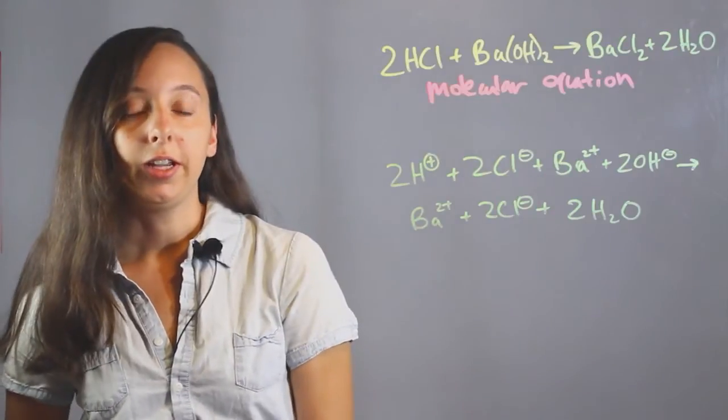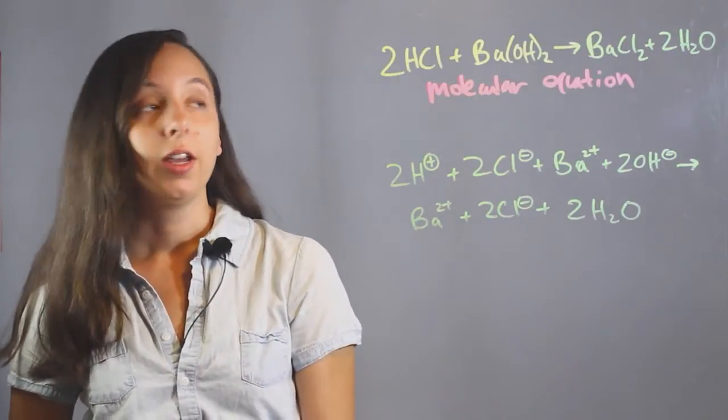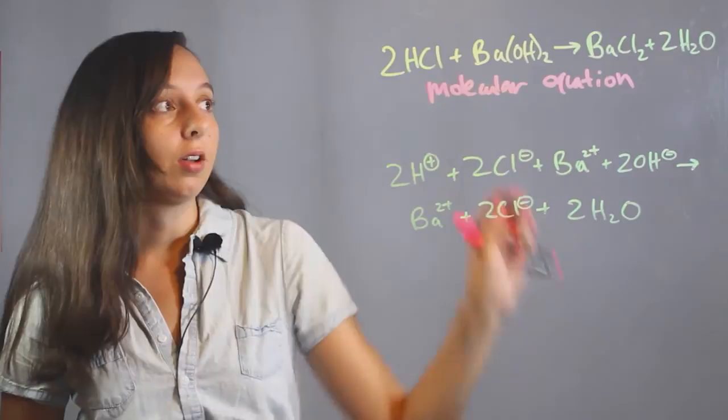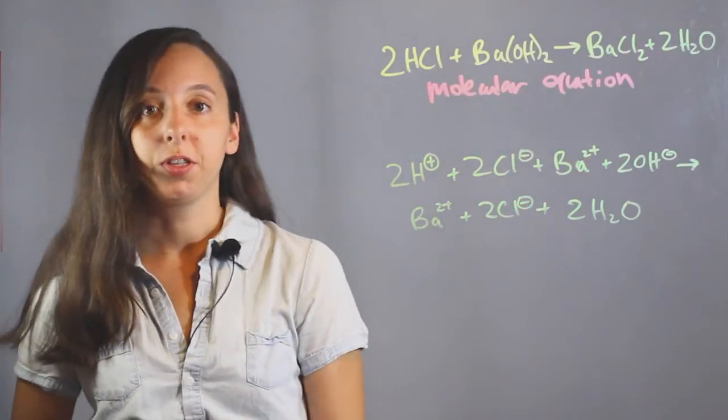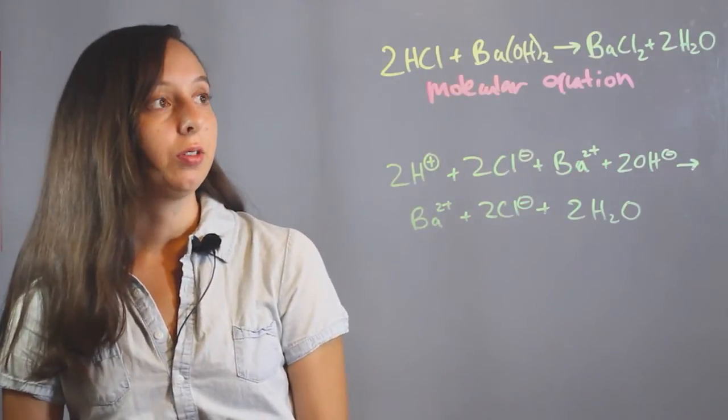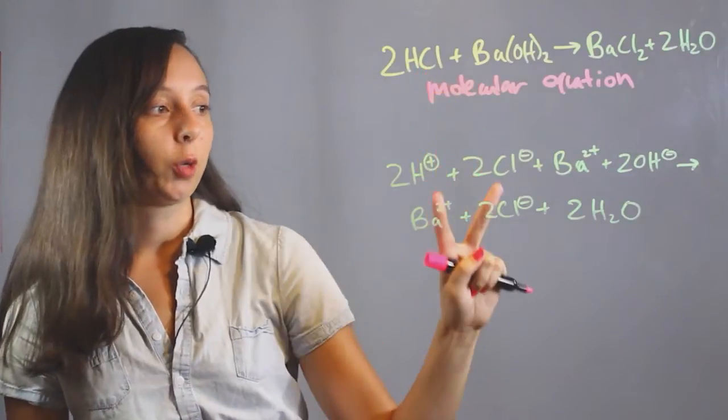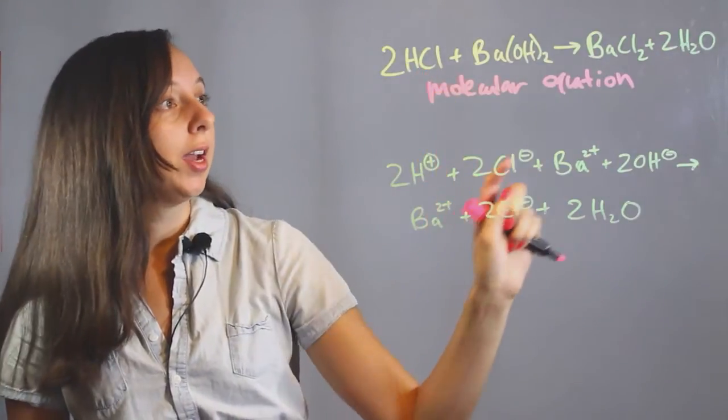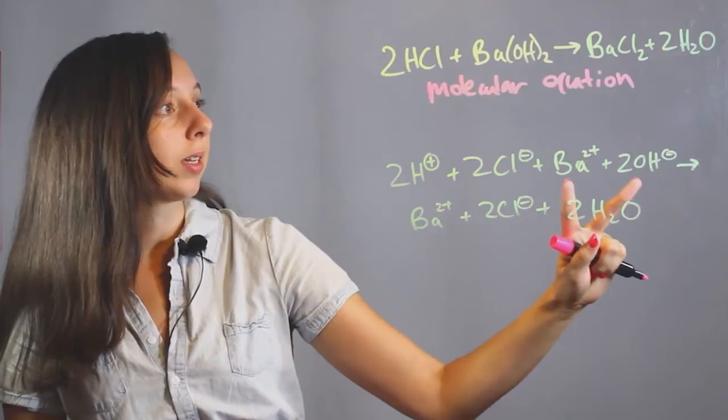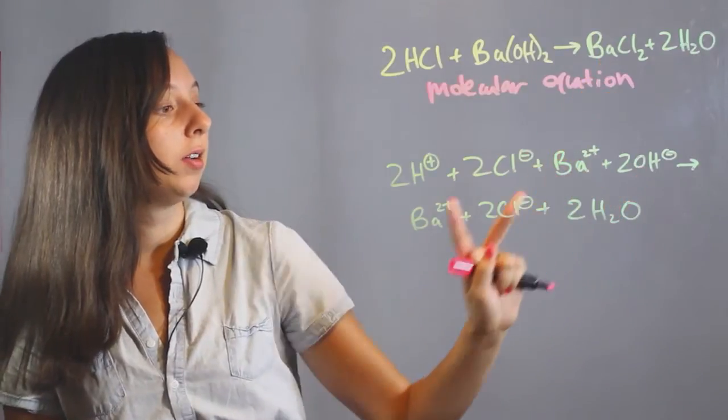The next thing we need to write is our total ionic equation. And so what this means is that we break these four things up into the respective ions. So in solution, hydrochloric acid won't look like this, it'll be broken up into ions. And this will also be broken up like this, got our barium chloride, broken up.